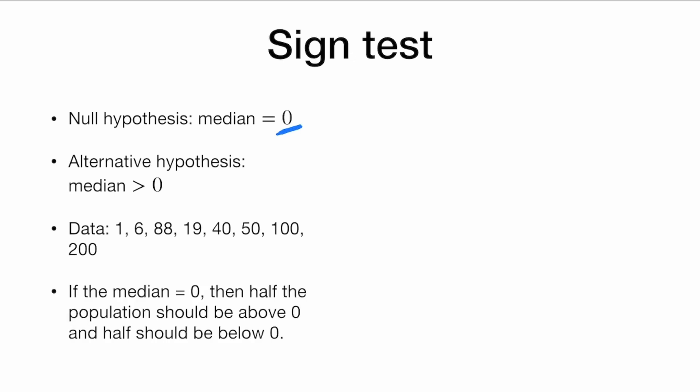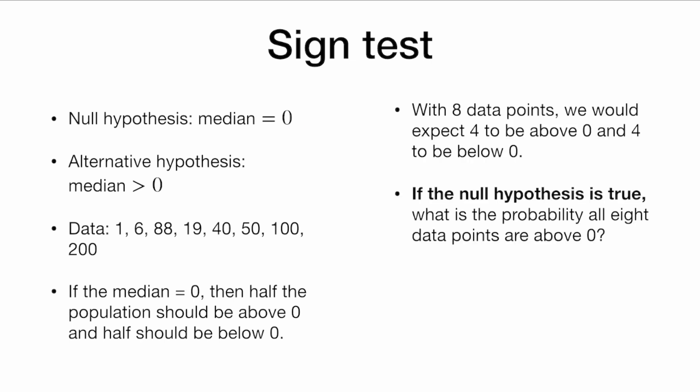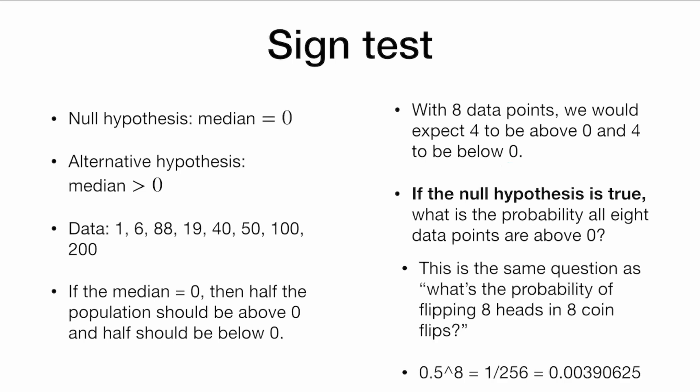So we have our data. And if the median is zero, then half the population should be above zero and half the population should be below zero. With eight data points, we would expect about four to be above zero and four to be below zero. So if the null hypothesis is true that the median is zero, what is the probability that eight data points are all above zero?